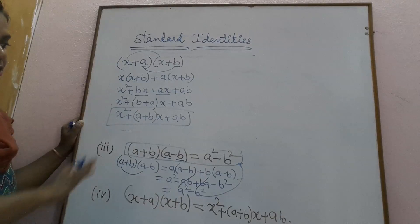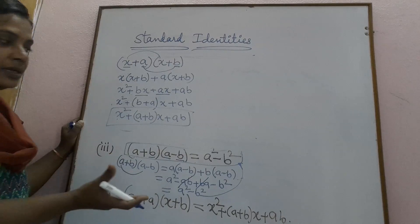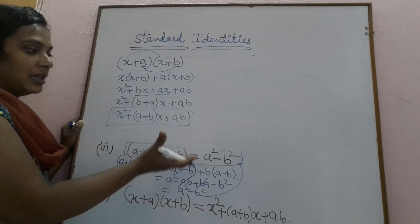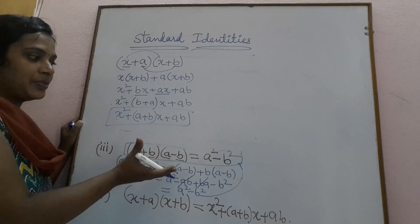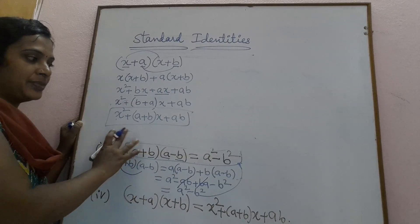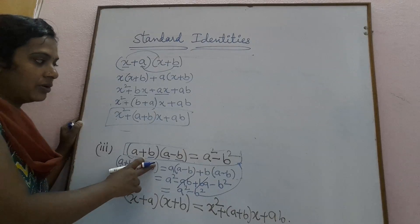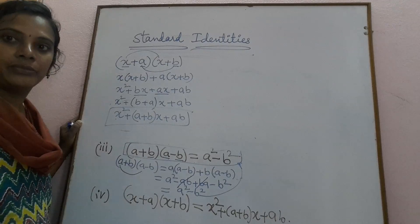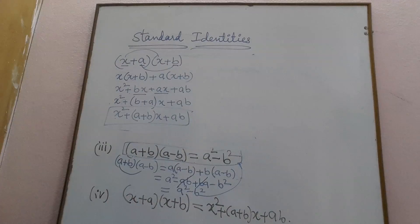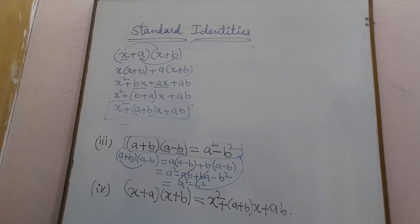We must remember these four identities. Next, depending on which given expression is suitable, you choose the appropriate identity and write the simplification. Okay. Thank you.